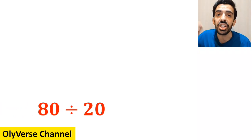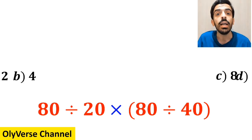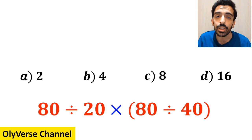What is the value of the expression 80 divided by 20 then multiplied by open parenthesis 80 divided by 40 close parenthesis? Which option do you think is the correct answer to this question?